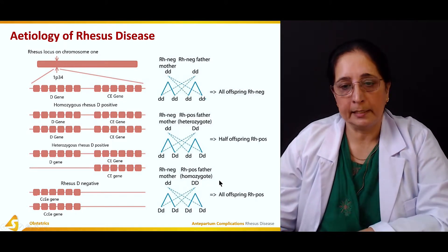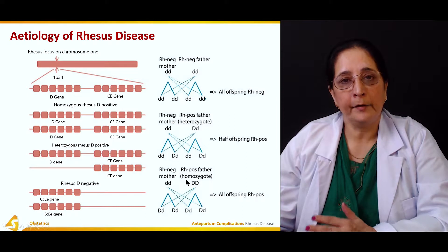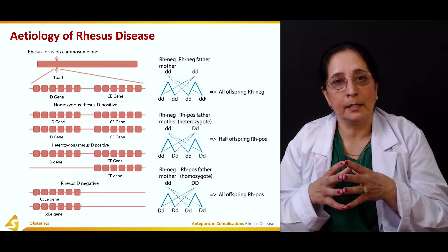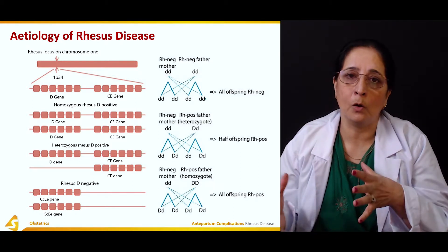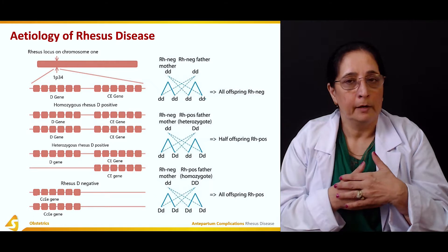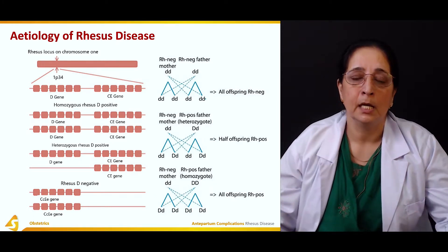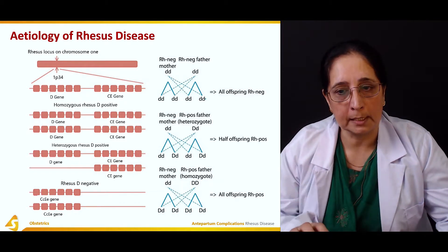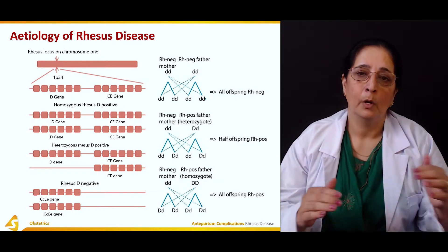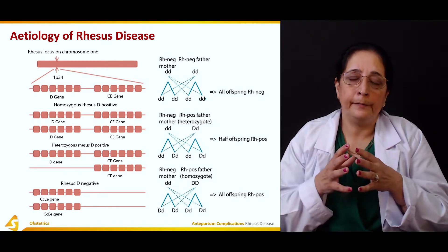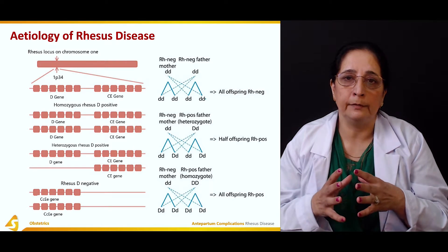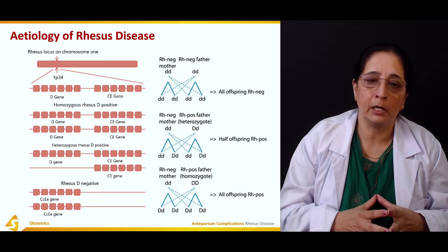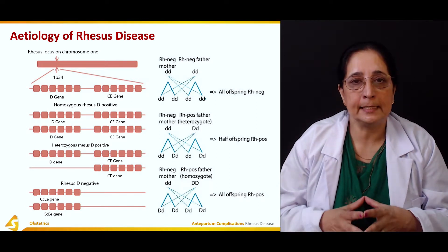In the third scenario, the mother is Rh negative and the father is Rh positive and homozygous — both genes are capital D. The father can pass the Rh gene to all offspring, making all of them Rh positive. Whether Rhesus disease develops depends on the father's blood group and whether he is homozygous or heterozygous for the Rhesus gene.